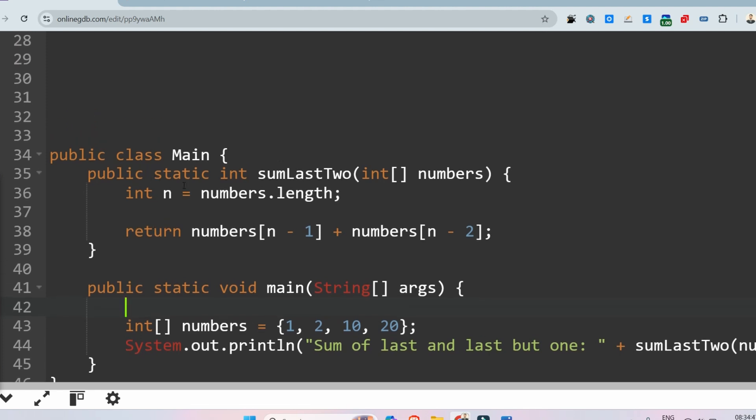Here in the sumLastTwo method, what we have written is int n which is an integer value variable in which we are storing the length of the array. This is the argument of this function and this is the array numbers. Numbers.length is an inbuilt function by which we are getting the length of that array. So n is storing that length.